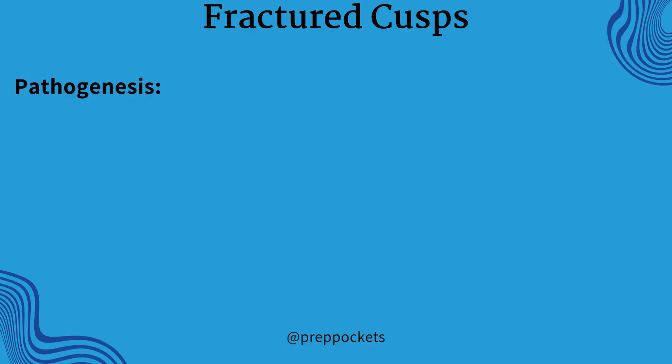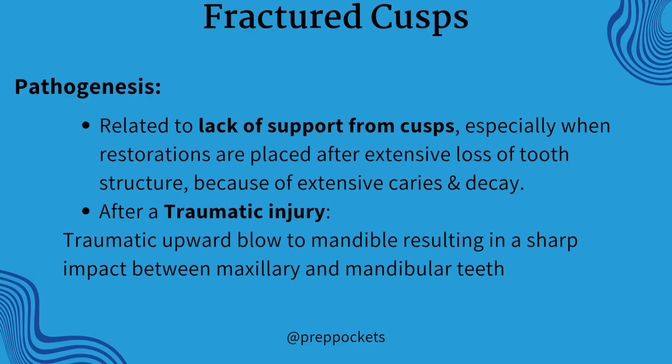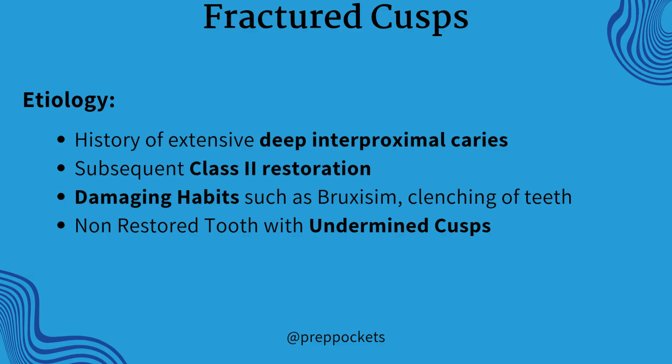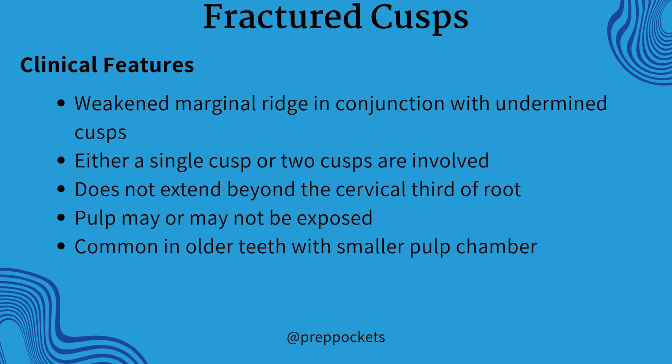Let's talk about its pathogenesis. It happens because of a lack of support from cusps due to extensive decay and caries, and after a traumatic injury — like when a person fights, a traumatic upward blow to the mandible results in a sharp impact between maxillary and mandibular teeth. It also happens when a tooth has deep interproximal decay, a patient has high occlusal forces, or is a bruxer.